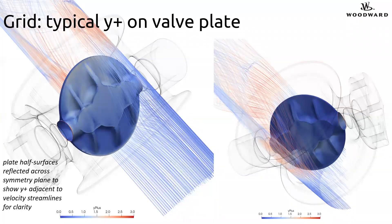This is a distribution of Y-plus on both sides of the plate for one of the high flow conditions. We were generally able to achieve a Y-plus of one to one-and-a-half for the majority of the plate area.